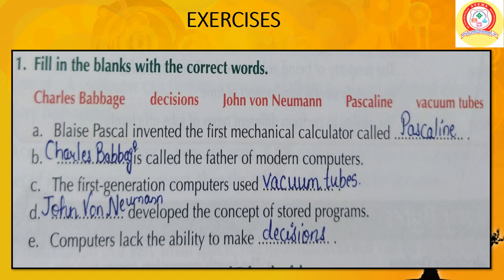Exercise — Fill in the blanks. A: Blaise Pascal invented the first mechanical calculator called Pascaline. B: Charles Babbage is called the Father of Modern Computers. C: The first generation computers used vacuum tubes. D: John von Neumann developed the concept of stored programs. E: Computers lack the ability to make decisions.